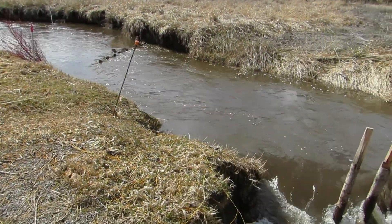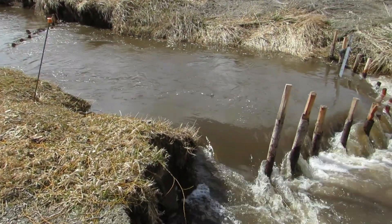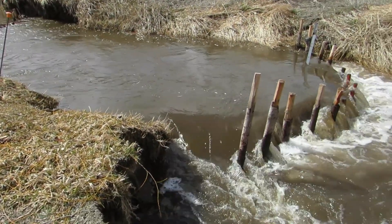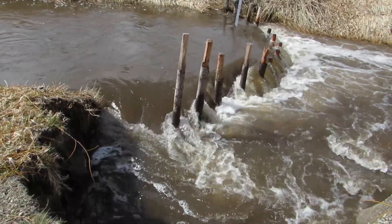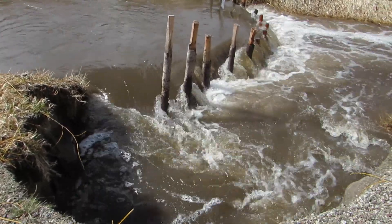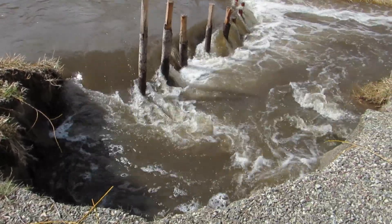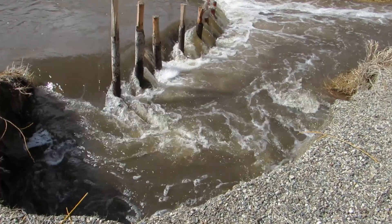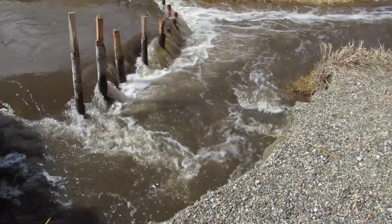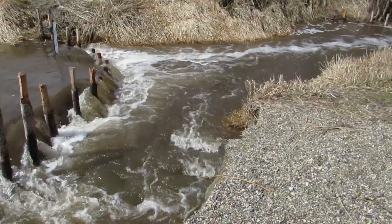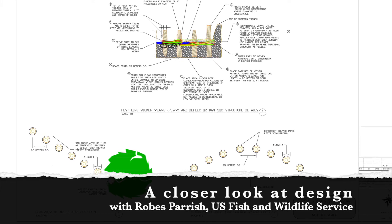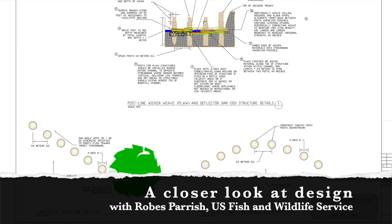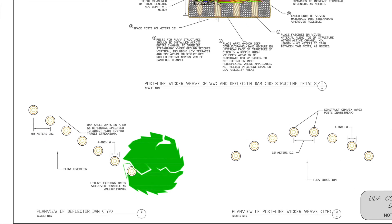When we push the stream against the bank, it causes sediment to come out of the bank and into the water, and then we have a channel-spanning dam downstream that will help to capture that sediment. Here on the bottom left, this is an example of a deflector dam.